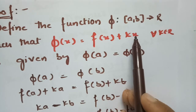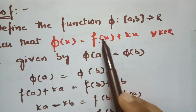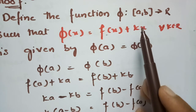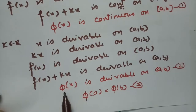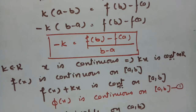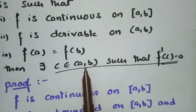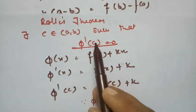Since x is an algebraic function it is continuous on closed [a, b]; multiplying by constant k it remains continuous; and since f is continuous, the sum φ(x) is continuous. Similarly, x is derivable, kx is derivable, and f(x) is given to be derivable, so φ(x) is derivable on open (a, b). Also, φ(a) = φ(b). By Rolle's theorem, if a function is continuous, derivable, and has equal endpoint values, there exists c in open (a, b) such that φ'(c) = 0.